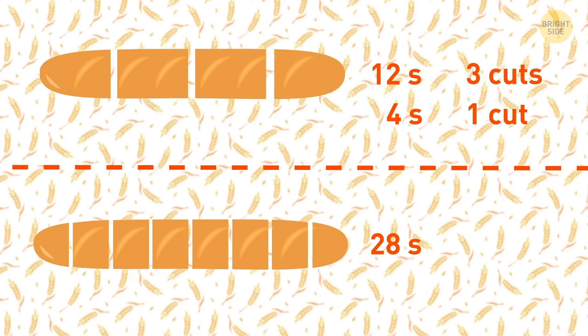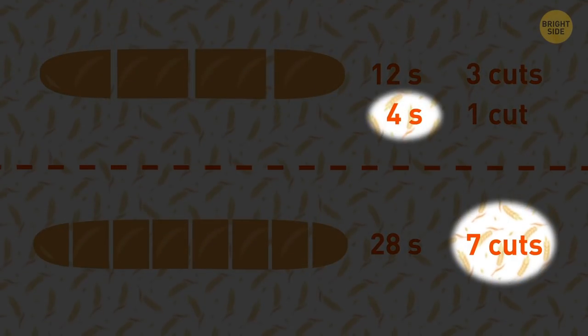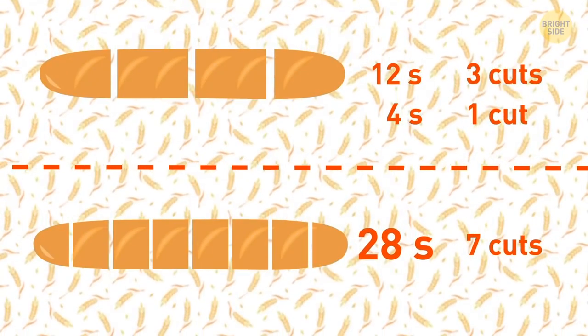So, if she now wants to cut it into 8 pieces, she needs to make 7 cuts. So, 7 cuts, 4 seconds each, would take 28 seconds.